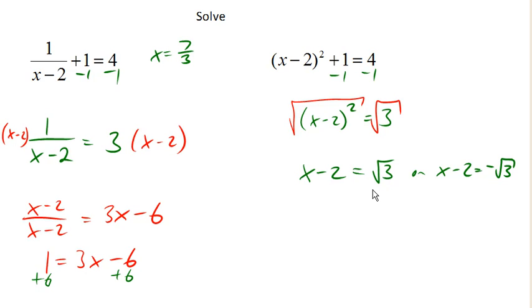So now to finish solving for x, we need to get x by itself. So we're gonna add 2 to both sides of the equation in both of these cases. So I'm gonna get x equals the square root of 3 plus 2. Notice that this plus 2 is not inside the square root. It is outside the square root.